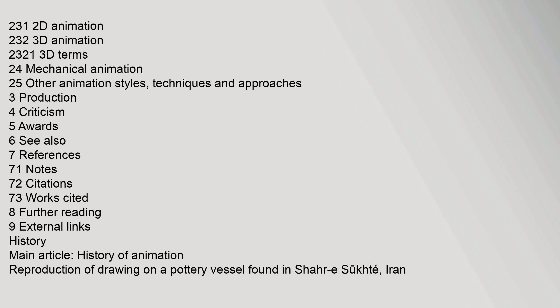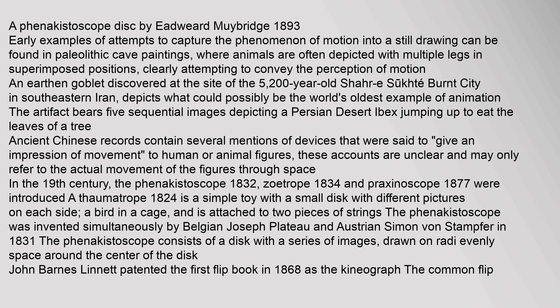Early examples of attempts to capture the phenomenon of motion into a still drawing can be found in Paleolithic cave paintings, where animals are often depicted with multiple legs in superimposed positions. An earthen goblet discovered at the site of the 5,200-year-old Shah-e-Sukhteh burnt city in southeastern Iran depicts what could possibly be the world's oldest example of animation, bearing five sequential images of a Persian desert ibex jumping to eat leaves. Ancient Chinese records also mention devices said to give an impression of movement to human or animal figures.